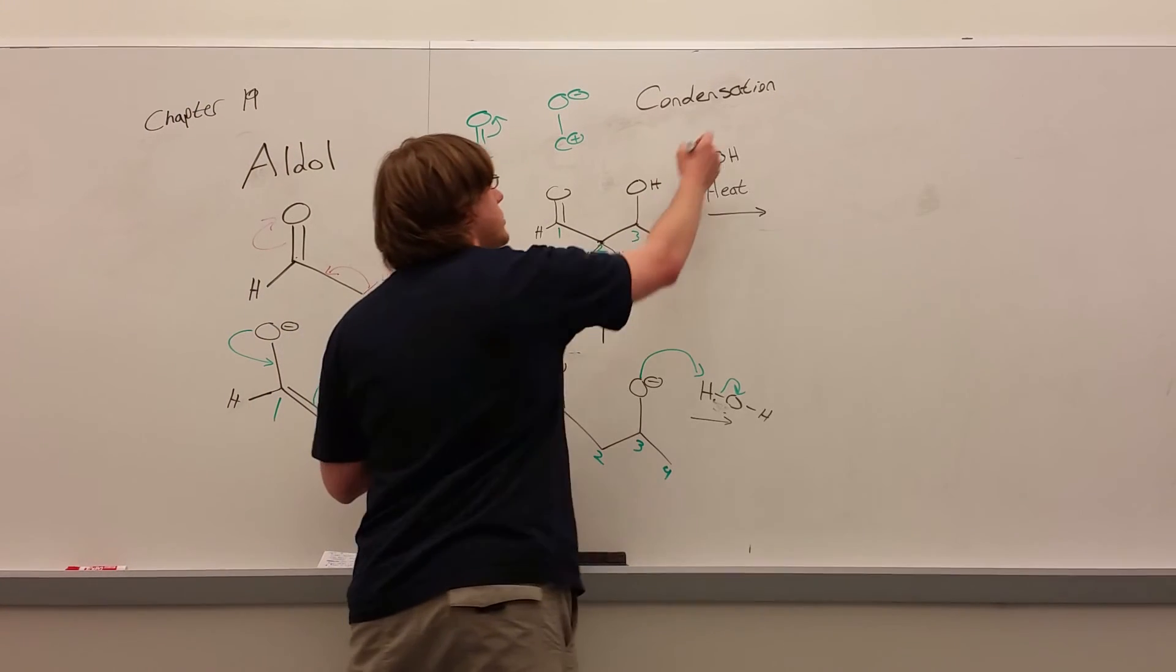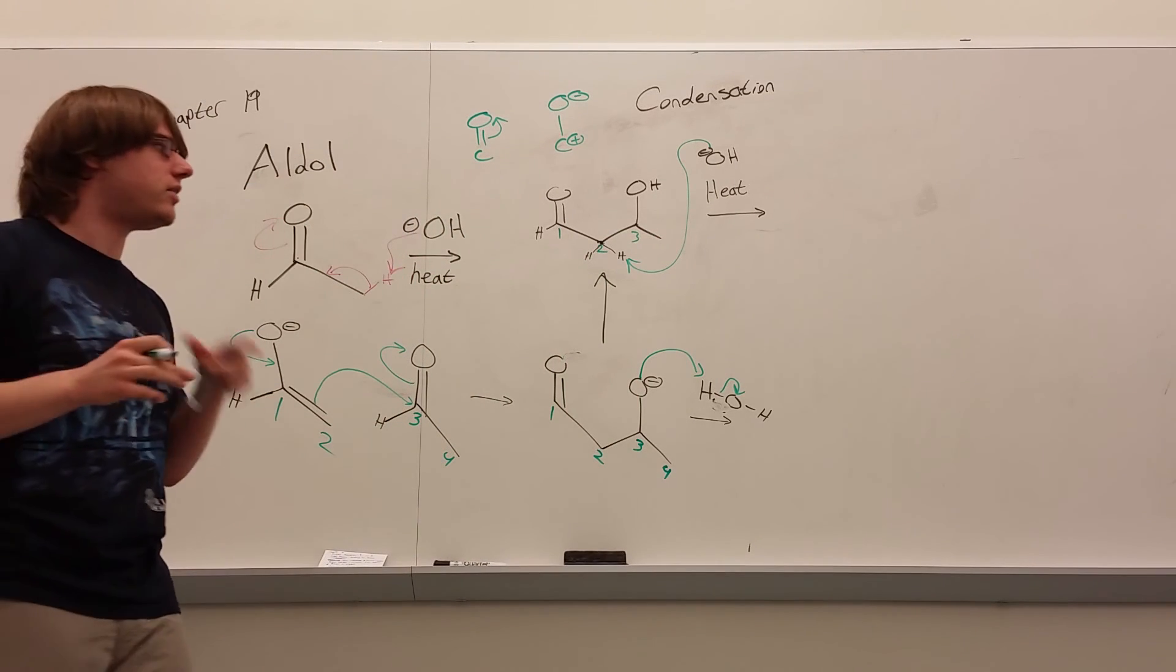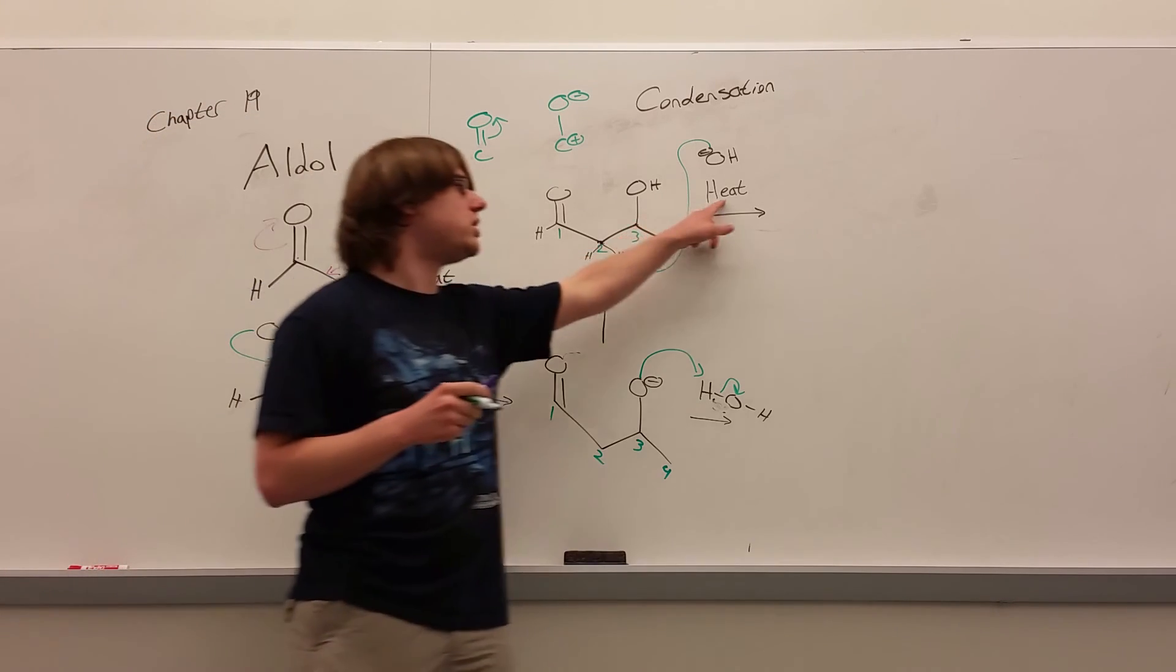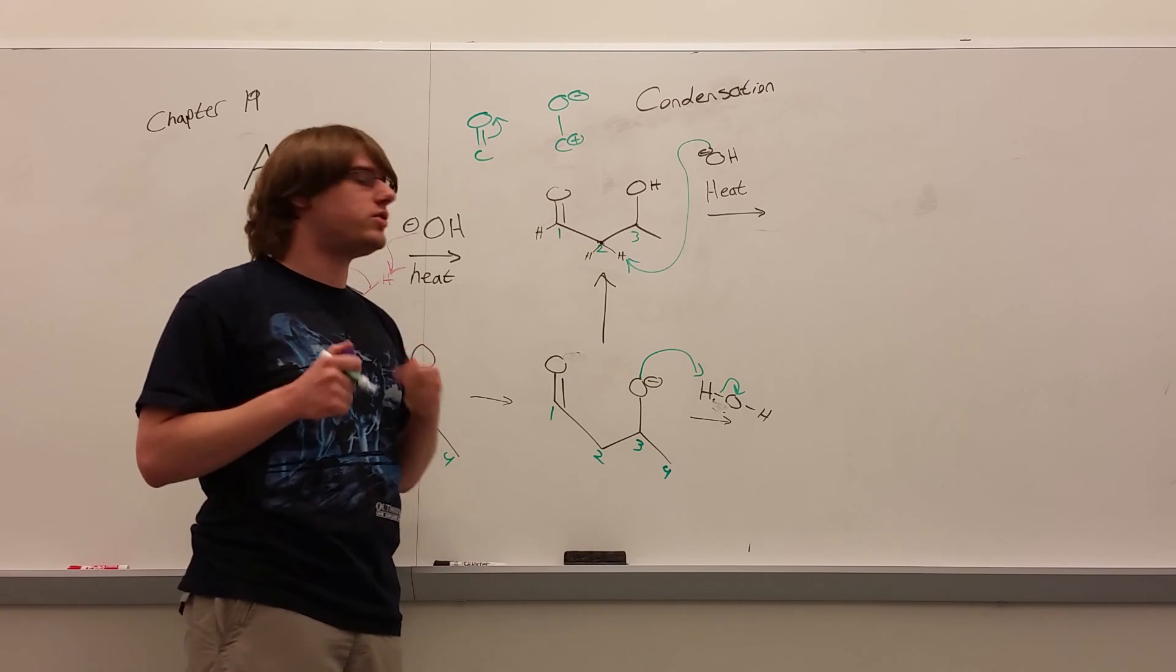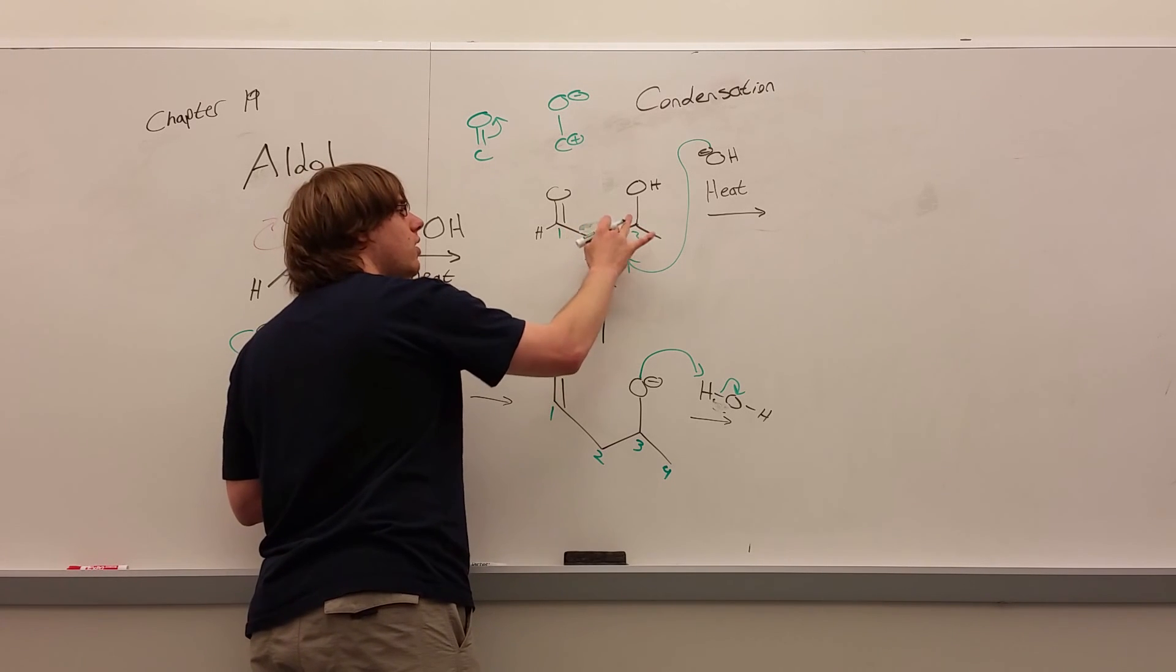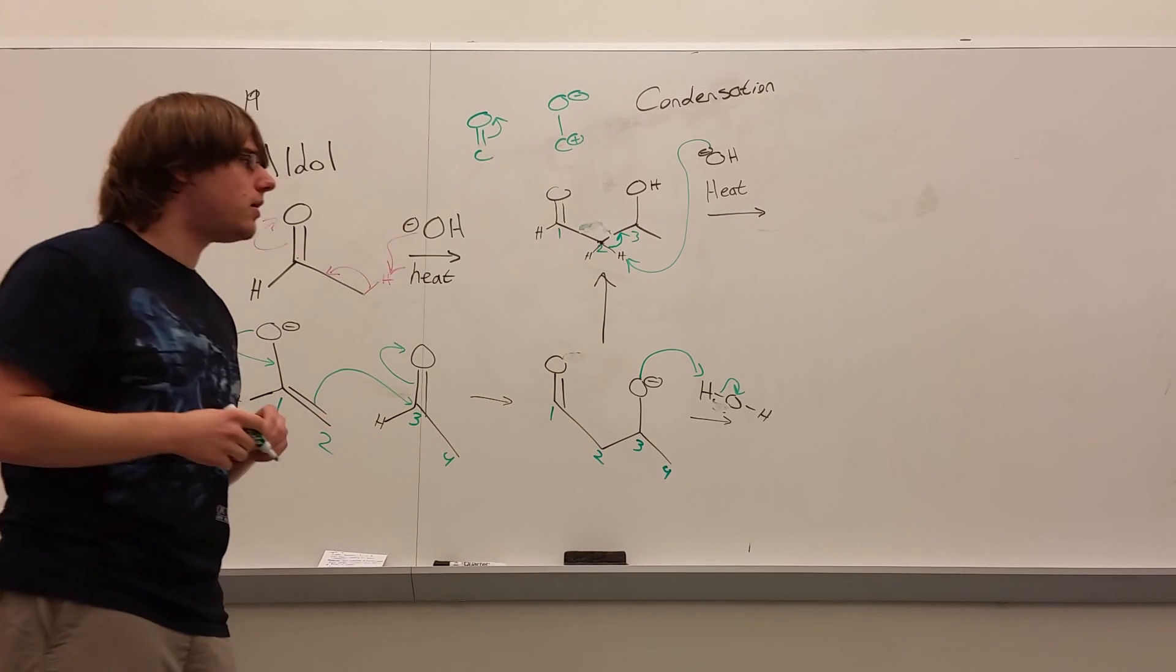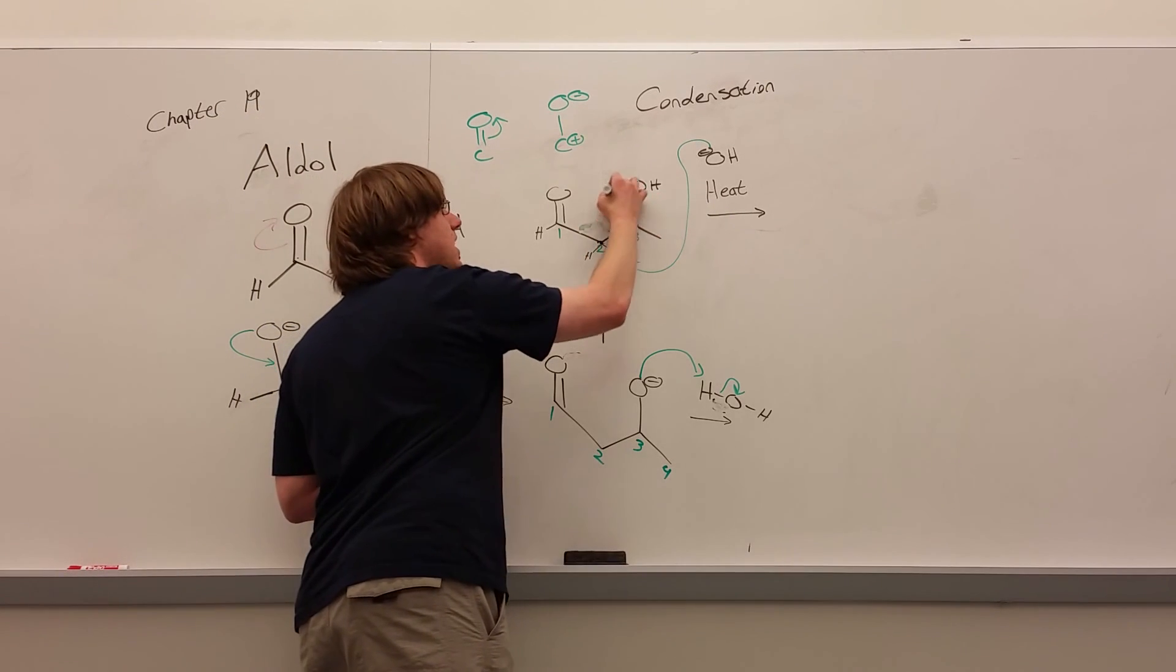And that OH minus will come in, grab that hydrogen. And now here's the difference. Here's what's special about the condensation reaction. And this only happens if you've done an aldol condensation and you see the word heat. What heat does is it drives the formation of double bonds. It does elimination reactions. And what happens is rather than the hydrogen going to form the enolate like we've done before, what's going to happen is that hydrogen carbon bond is going to swing down to the bond between two and three, forming a carbon-carbon double bond. And the OH will be kicked out in the process.